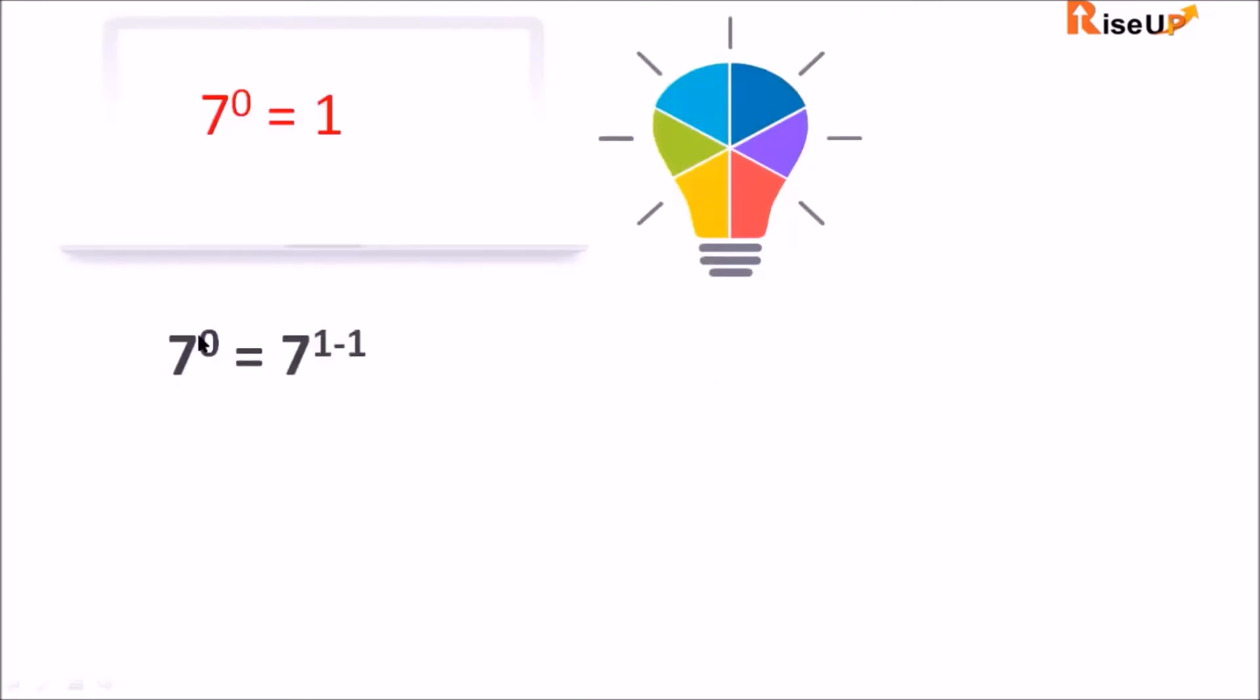Can I write 7 raised to power 0 as 7 raised to power 1 minus 1? Because we know 1 minus 1 equals 0.